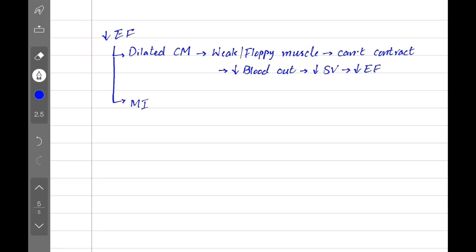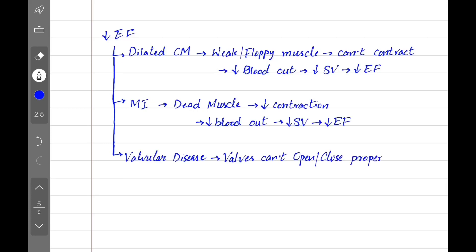In myocardial infarction, we get a dead cardiac muscle which cannot contract. This leads to less blood out, decreased stroke volume and a reduced ejection fraction. In valvular heart diseases, cardiac valves can't open or close properly. So there is messy blood flow due to which stroke volume goes down and ejection fraction is decreased.